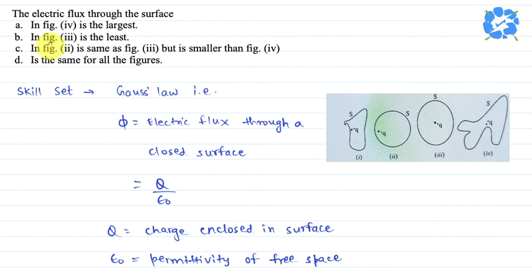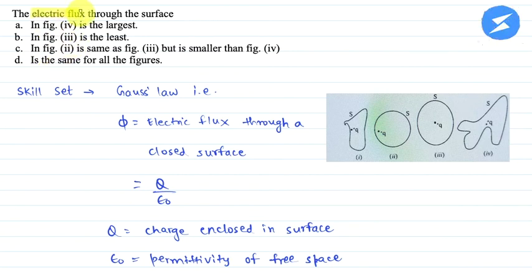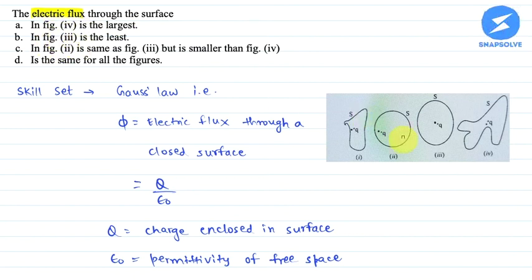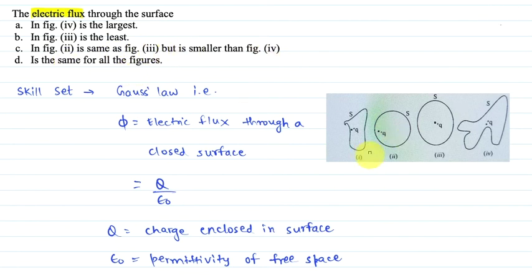Hello everyone, I am the teacher for this question. Let me explain the question to you. The question says that the electric flux through the surface: A - in figure 4 is the largest, B - in figure 3 is the least, C - in figure 2 is same as figure 3 but smaller than figure 4, D - is the same for all figures. These are 4 figures, 1 to 4.